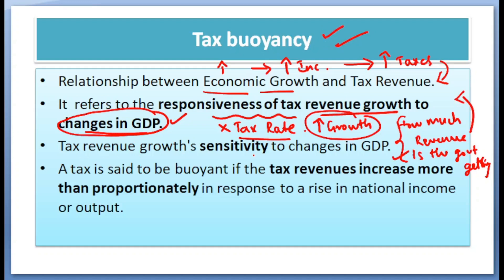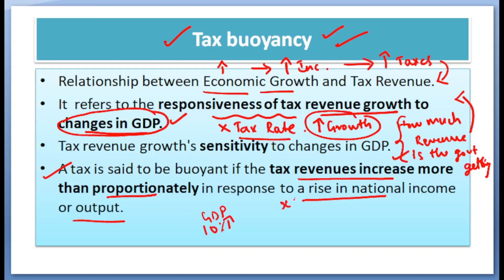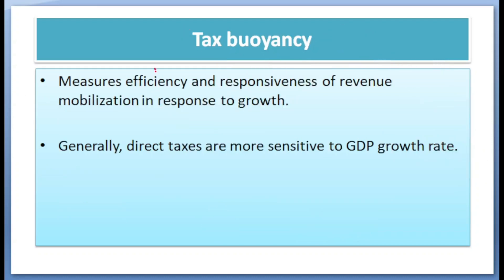Thus, tax revenue growth sensitivity is measured in tax buoyancy. A tax is said to be buoyant when tax revenues increase more than proportionately in response to a raise in national income or output. Say GDP increased by 10% — at that level, the government was getting X percentage of taxes. When GDP increased by 10%, the revenue increases by X plus 12%, meaning taxes are increasing by 2% more without changing any tax rate. Those taxes are said to be buoyant. So tax buoyancy measures the efficiency, responsiveness, and mobilization ability of the government in taxes — that is, how well the government can collect taxes without changing the tax rates when the economy is improving.